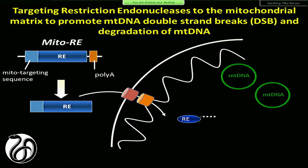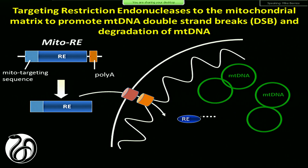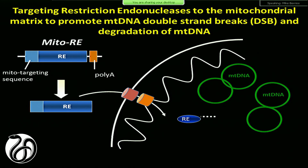Then you have a reduction in the number of copies of mitochondrial DNA. The mitochondria tends to keep a normal copy number — there's a mechanism controlling that. So whatever is left is going to replicate, and you have more mitochondrial DNA. Since you got rid specifically of the bad type, now you have more of the good one. That's the overall approach.